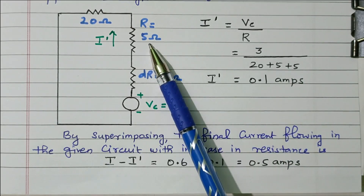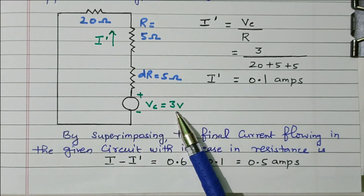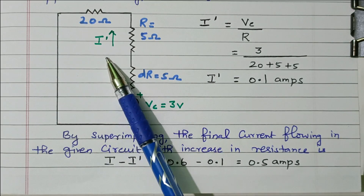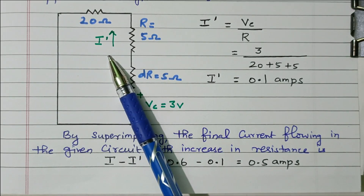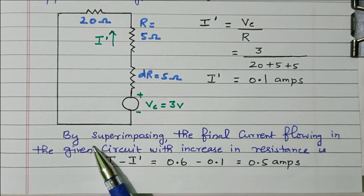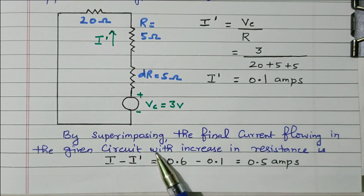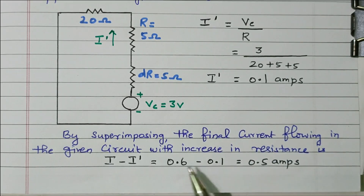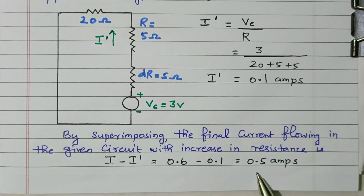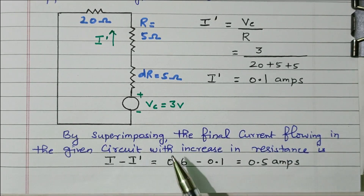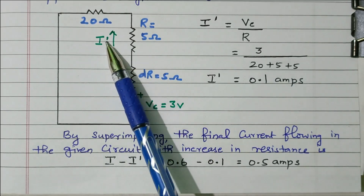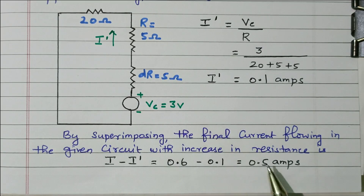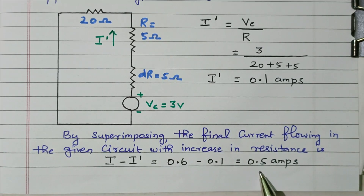While increasing the 5 ohm resistor by another 5 ohm, the compensation voltage of 3V is connected, and the current flowing in the opposite direction is 0.1 ampere. By superimposing, the final current flowing in the given circuit with the increase in resistor is I minus I' = 0.6 - 0.1 = 0.5 ampere. Initially 0.6 ampere was flowing; due to the increase in resistance, 0.1 ampere flows in the opposite direction, so after increasing the resistor the current changes to 0.5 ampere.